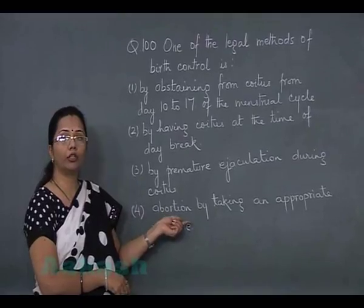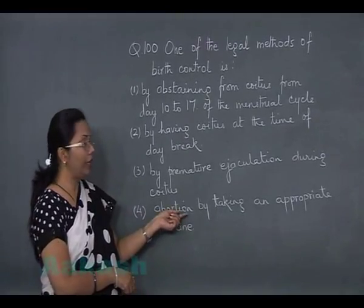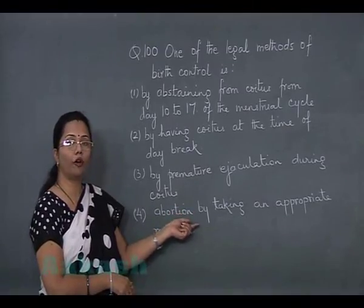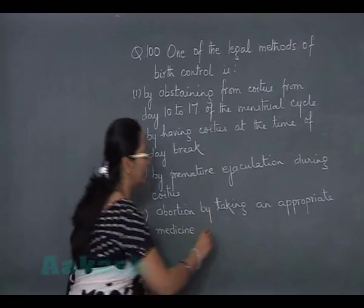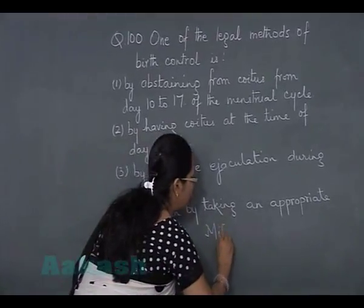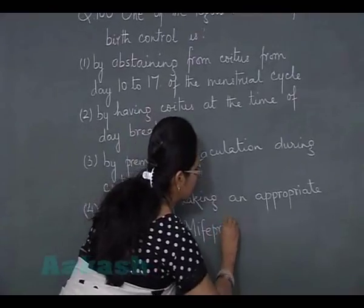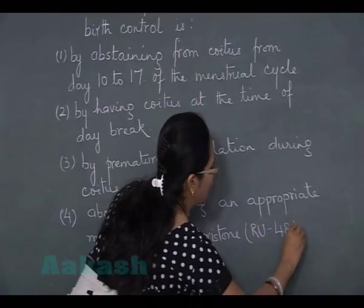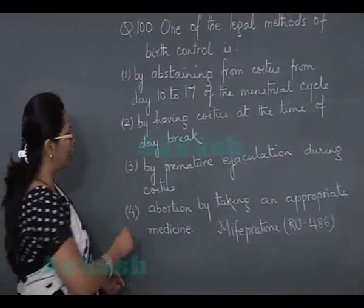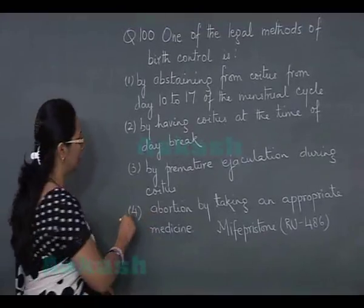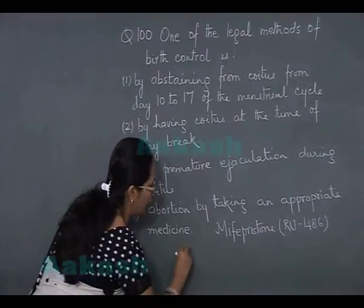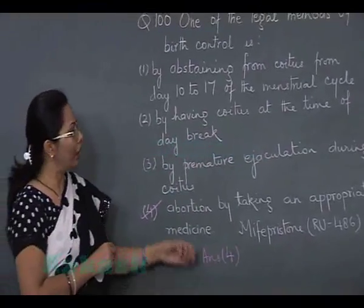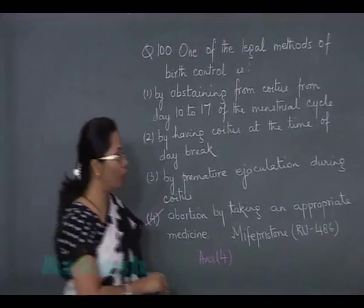There is an abortion pill by which a pregnancy of up to seven weeks can be aborted — that pill is mifepristone, also known as RU-486. Thus our best suited answer for question 100 is option four.